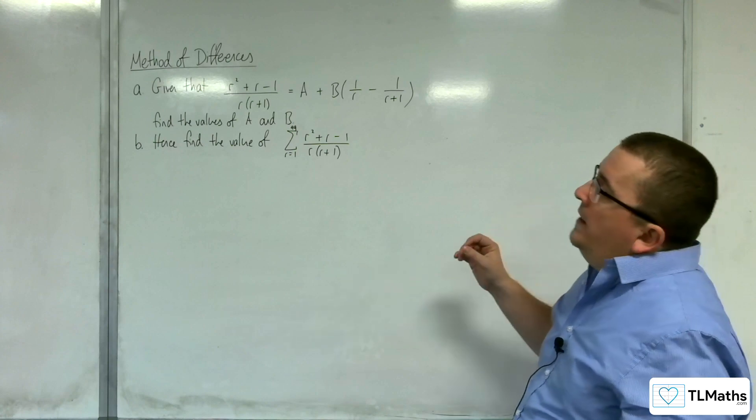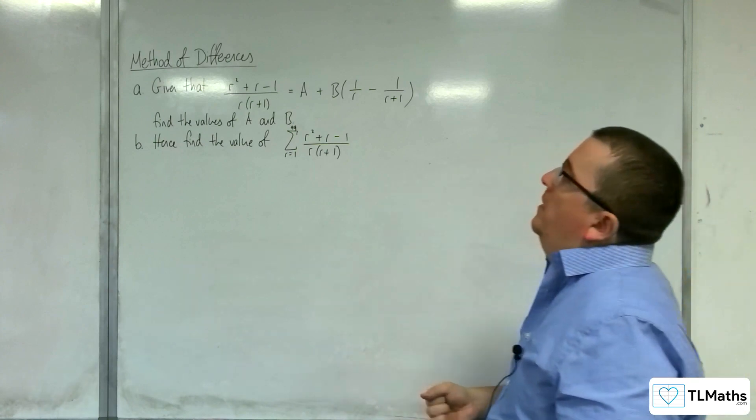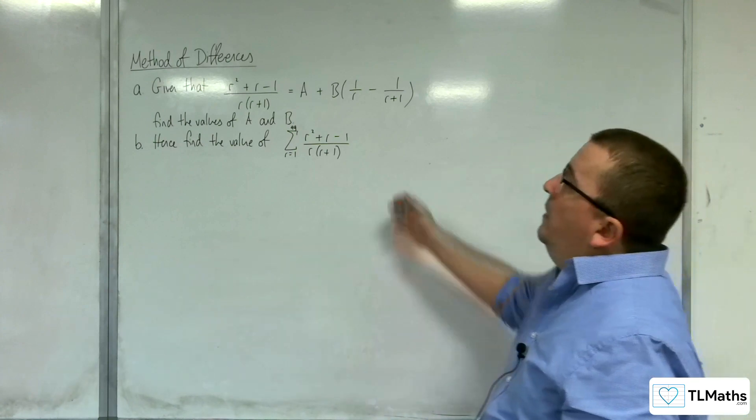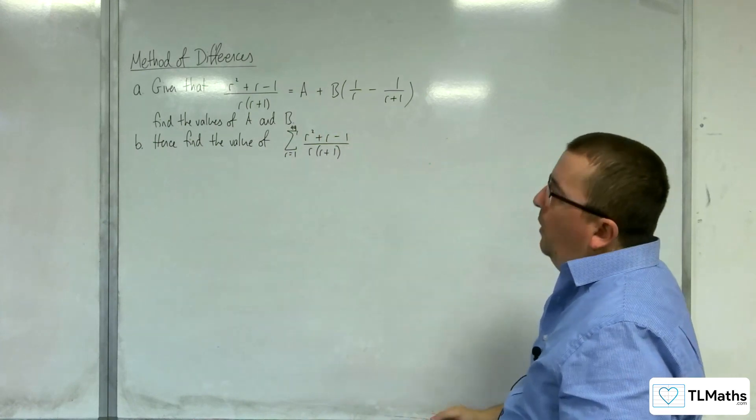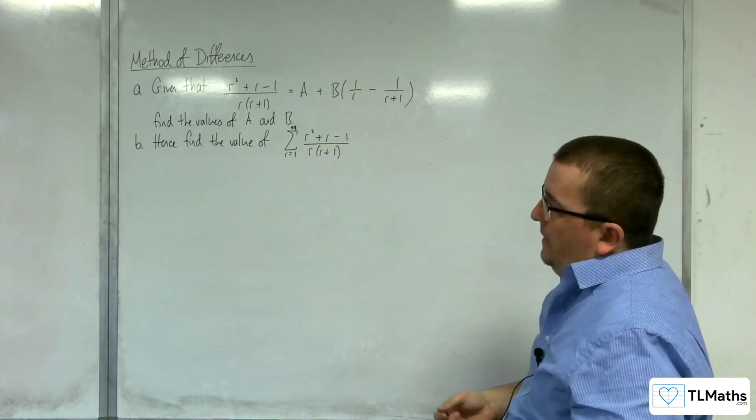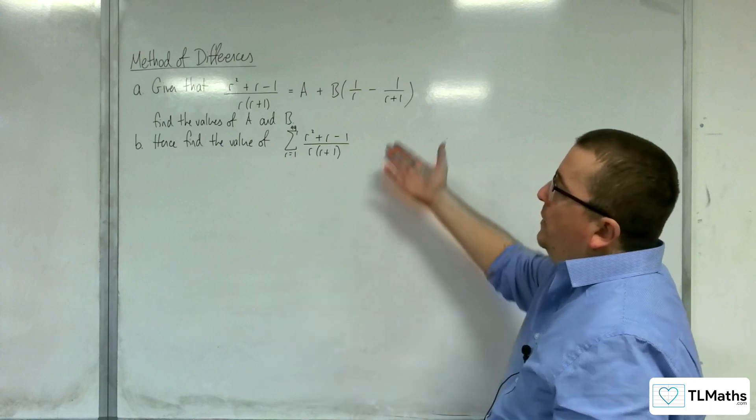In this problem, part a, given that r squared plus r minus 1 over r(r plus 1) is equal to a plus b times (1 over r, take away 1 over r plus 1), find the values of a and b. And then part b, hence find the value of this.